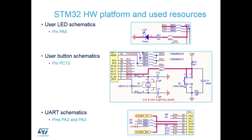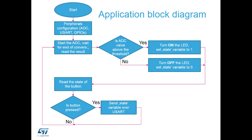Looking at the schematics: you've already seen the LED section. The push button is connected to PC13 on the microcontroller, which is pin number 2. The UART connections are PA2 and PA3, or pins 16 and 17, connected to the top half of the board where we get our virtual COM port. The flow diagram shows that we're using polling - going round in our loop with no interrupts and not putting the device to sleep.